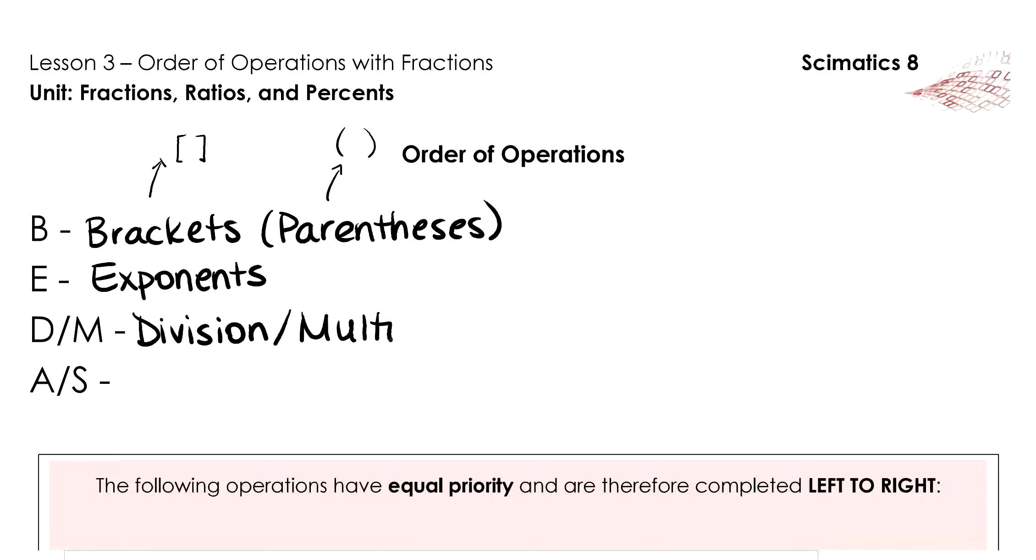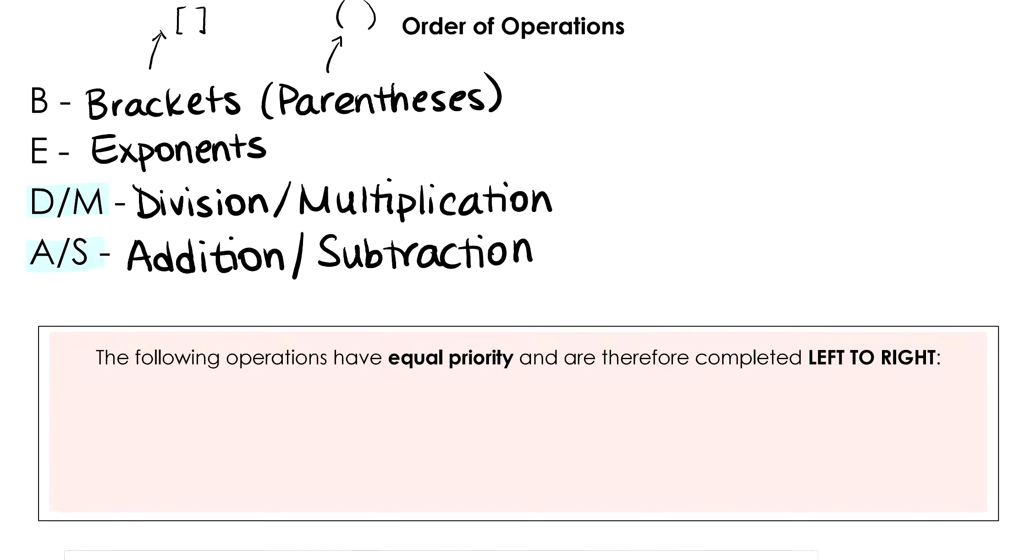A is for addition and S is for subtraction. And I've written them in the form D/M and A/S so that we never forget that these two operations, division and multiplication, and addition and subtraction, are operations of equal priority and must be completed left to right when they both appear.